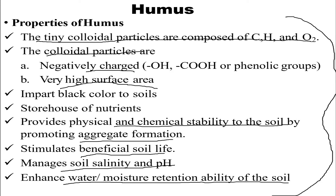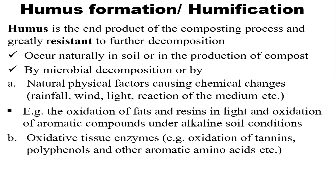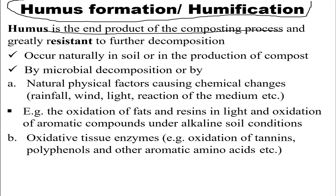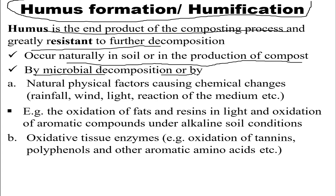Moving on to humus formation, also known as humification. Humus is the end product of the composting process and is greatly resistant to further decomposition. It occurs naturally in soil, in the production of compost, or through microbial decomposition.